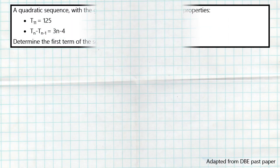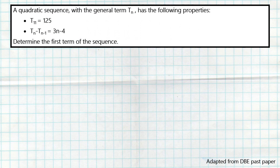We are given that a quadratic sequence with the general term Tn has the following two properties: term 11 is equal to 125, and Tn minus T(n-1) is equal to 3n minus 4. The question says determine the first term of the sequence.